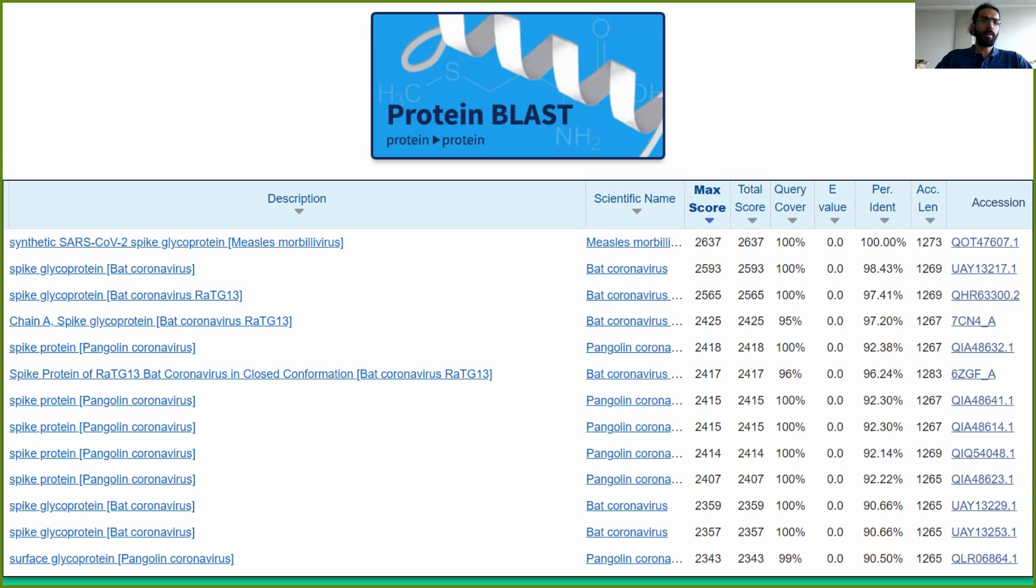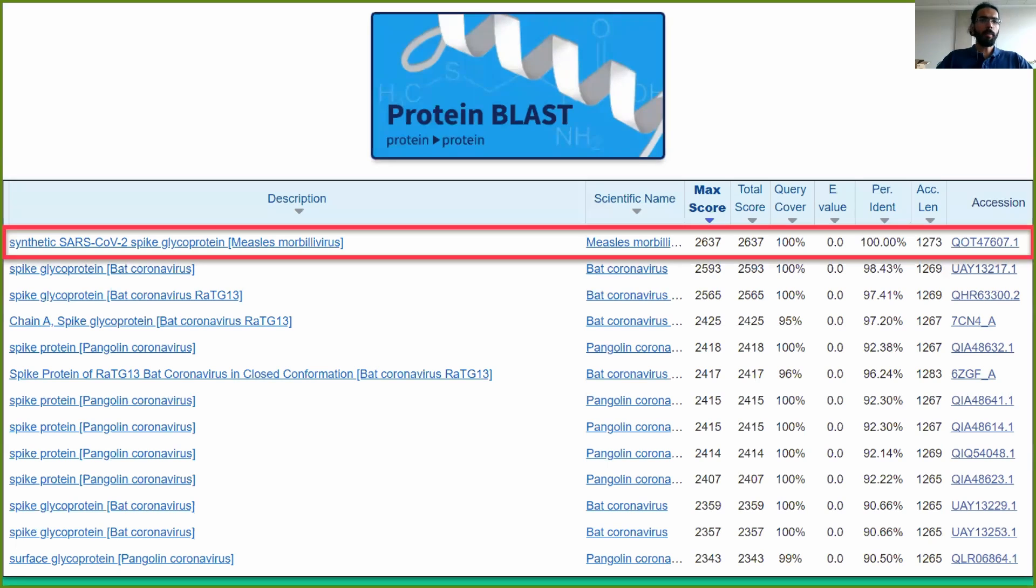The specific details behind bit score calculation are out of the scope of the course. Regardless, BLAST will report many more hits than we want to use, and it is our job to curate this dataset. At the time of recording this video, the entry with the largest max score is named synthetic SARS-CoV-2 spike glycoprotein measles morbillivirus, which has a max score of 2637 and a percent identity of 100%.